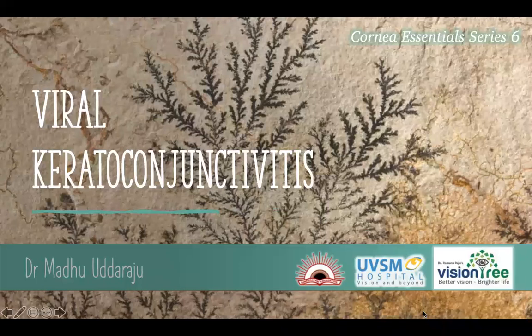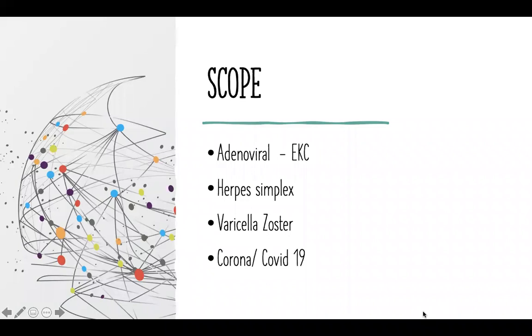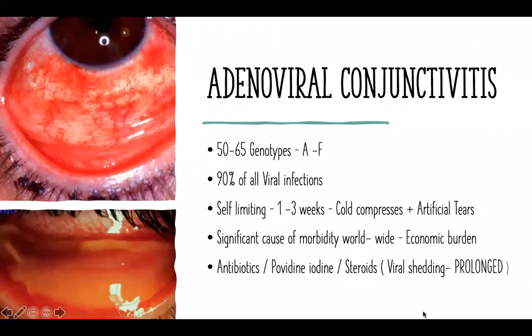Dear friends, welcome to the Cornea Essential Series. Today, as the sixth part of the series, we will cover the topic of viral keratoconjunctivitis. The scope of this talk covers the following headings: adenoviral conjunctivitis, also called epidemic keratoconjunctivitis, herpes simplex, varicella zoster, and the recent COVID-19 kind of conjunctivitis.